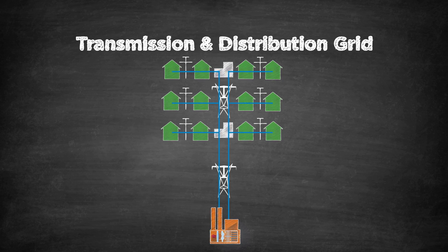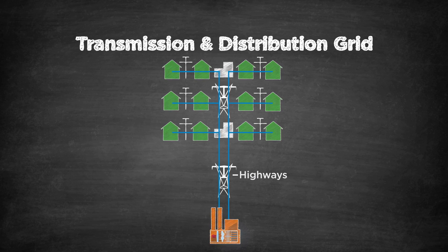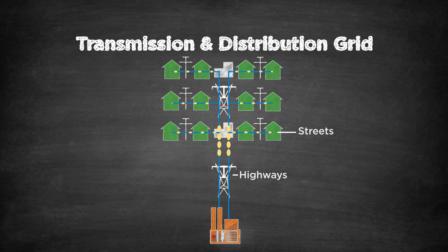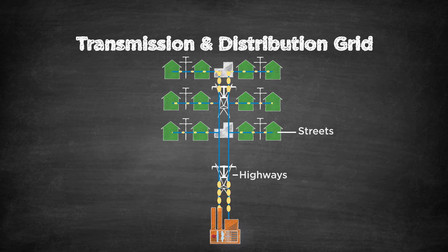You can think of all of this like city roads and highways. The really big power poles are like highways - they carry a lot of electricity, and you can travel long distances without stopping. Then when you get off the highway, you're on smaller city streets. When you go from highway to a street, you use an intersection.